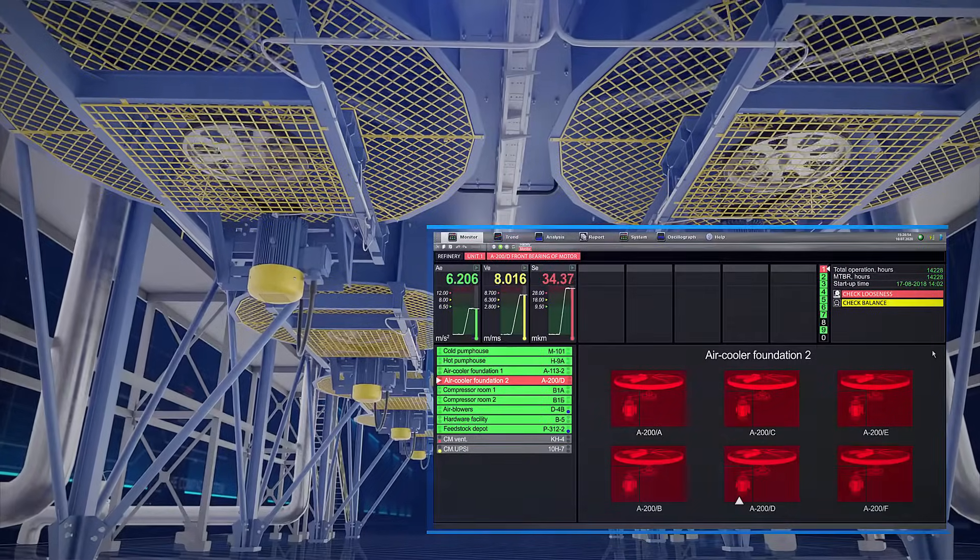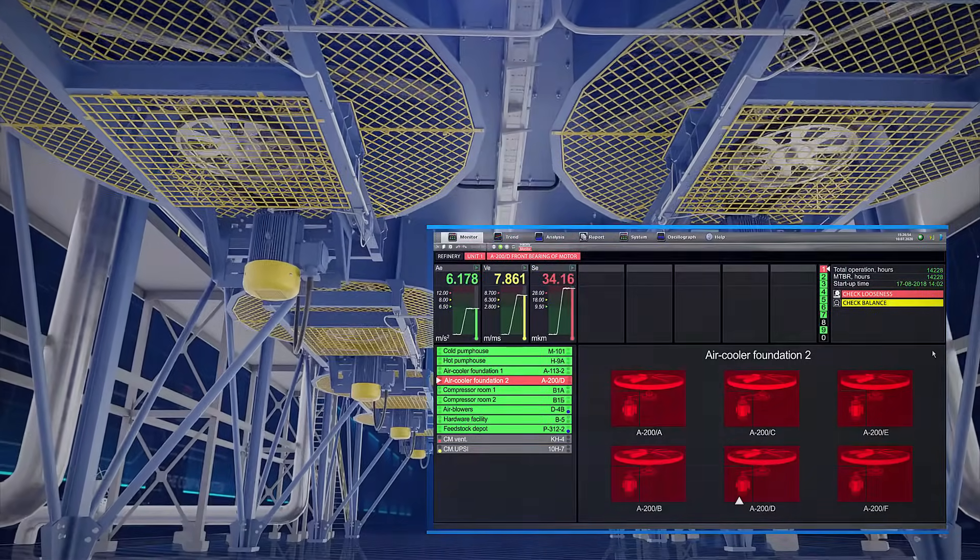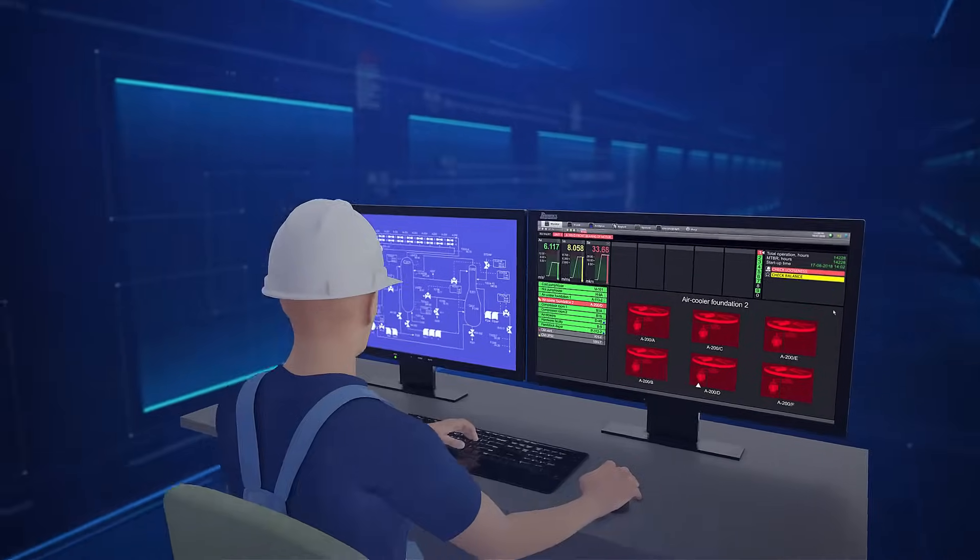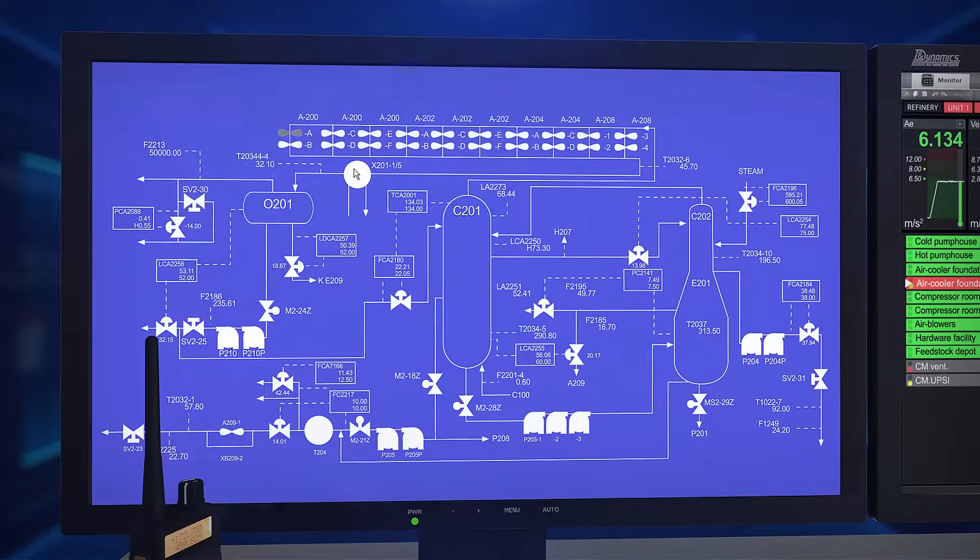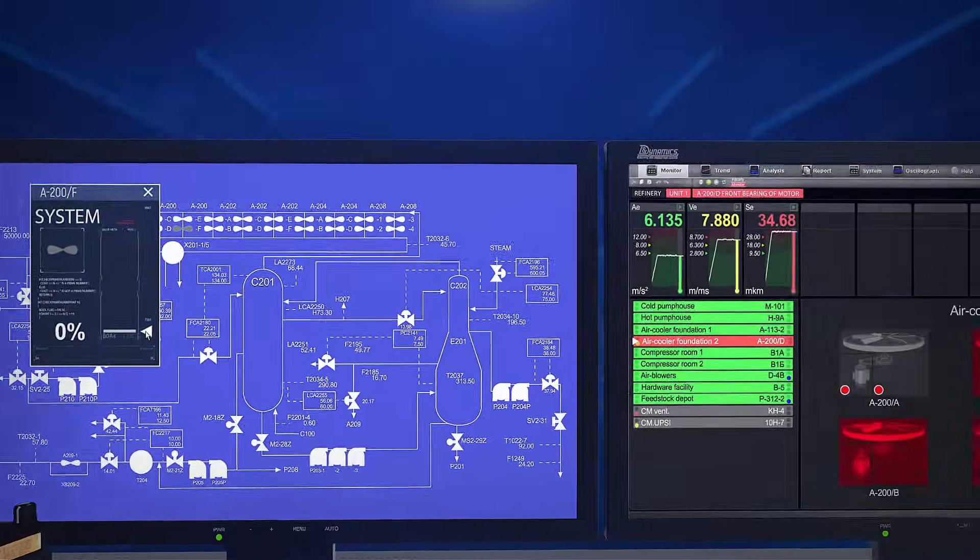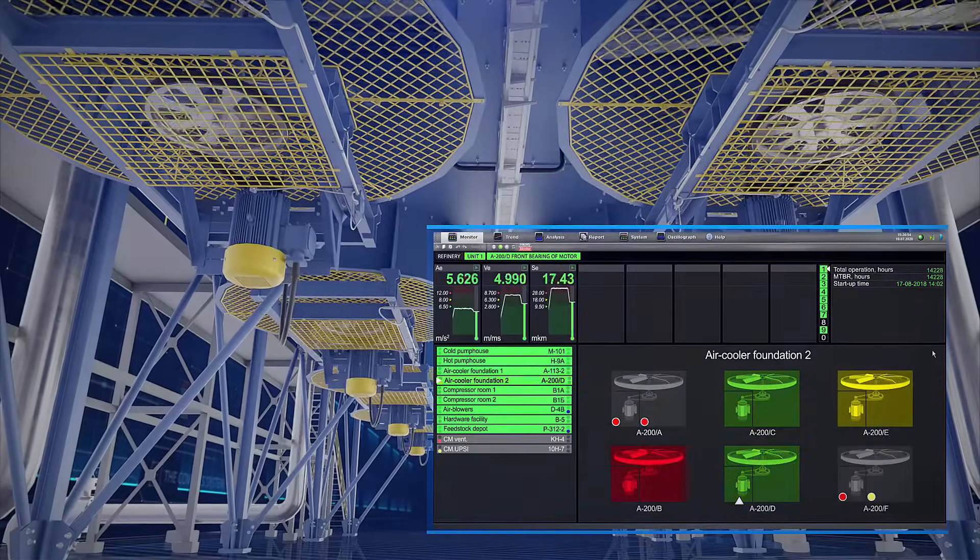Receiving the system's prescriptions to check looseness, the operators attempted to relieve destructive forces by switching two coolers out of operation. This improved the condition of other machines.